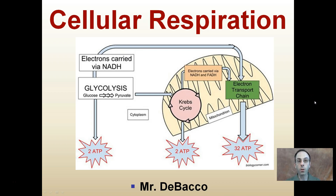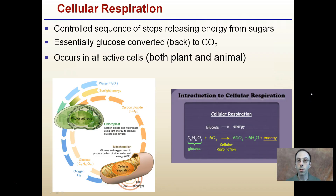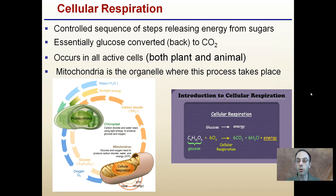Here I'm going to provide a brief overview of cellular respiration, focused mainly on glycolysis, the Krebs cycle, and the electron transport chain. The quick overview: cellular respiration is a controlled sequence of steps releasing energy from sugars. Essentially, glucose is converted back to carbon dioxide. It's the opposite of the photosynthetic process. Cellular respiration occurs in active cells, meaning both plant and animal cells, and the mitochondria is the organelle where this process takes place.